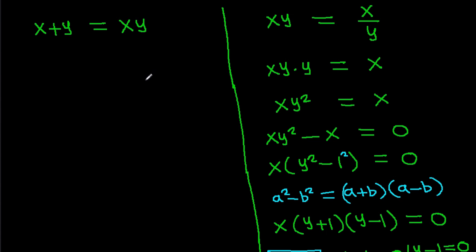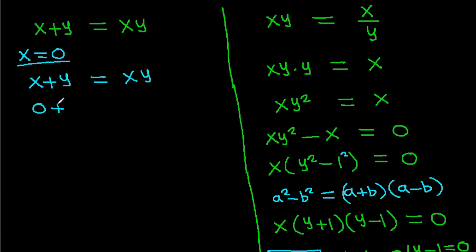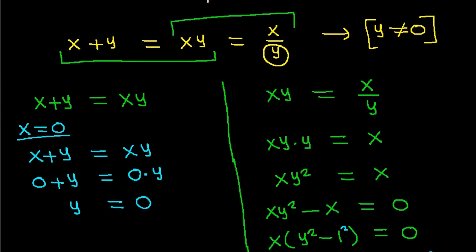Suppose x equals 0. Then the first equation gives 0 plus y equals 0 times y, which simplifies to y equals 0. But we already established that y cannot equal 0, so this is a contradiction. Therefore, x cannot equal 0.